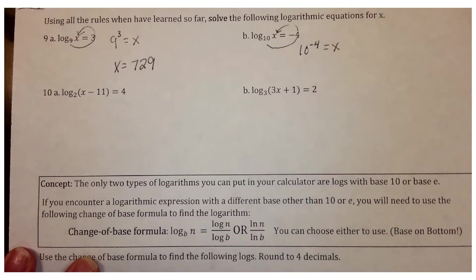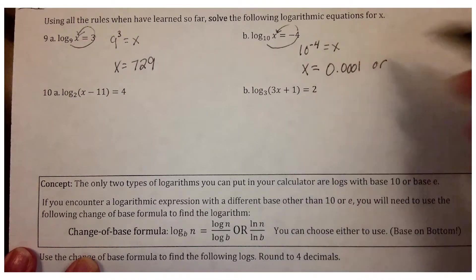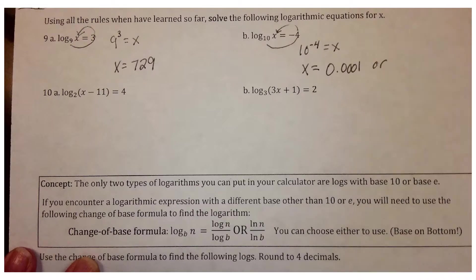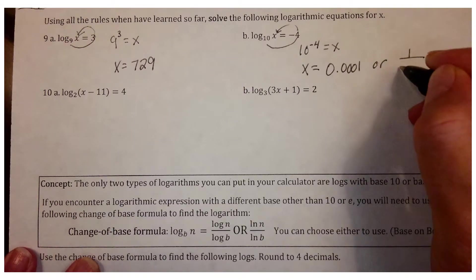You could write it as a decimal or you could write it as a fraction. Now if you wrote it as a fraction, it would be 4 zeros. So 1, 2, 3, 4.